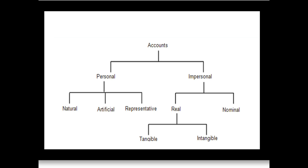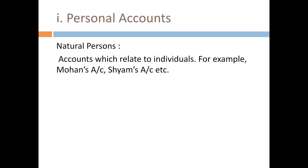Accounts are shown in a diagram with personal and impersonal categories. The personal account is divided into natural and artificial. The impersonal account includes real account and nominal account. The real account is further divided into tangible and intangible. So we have: personal account, real account, and nominal account.